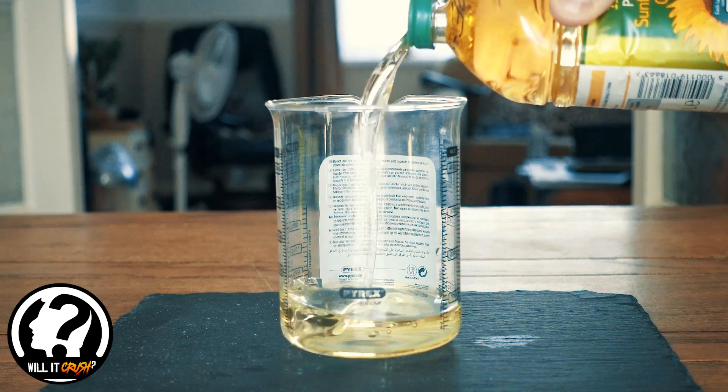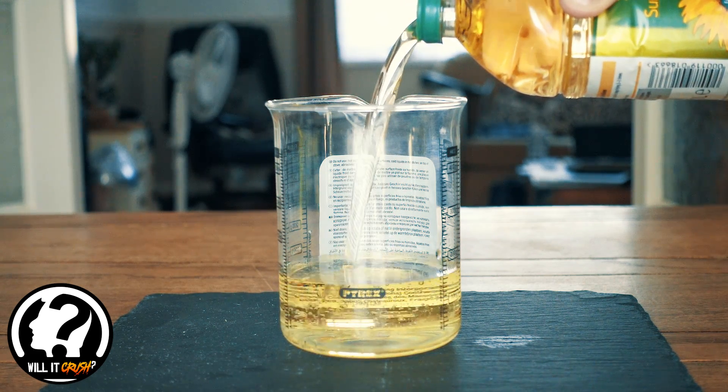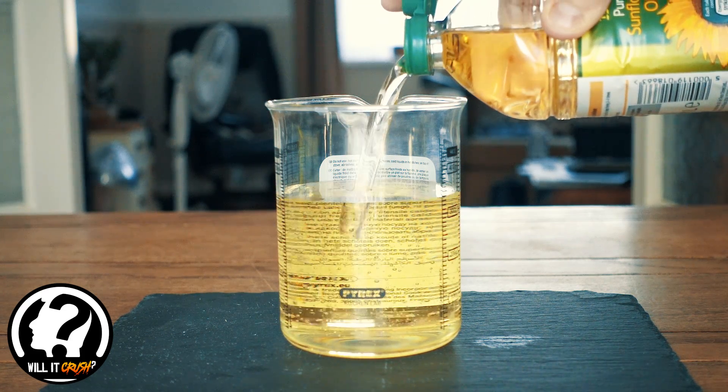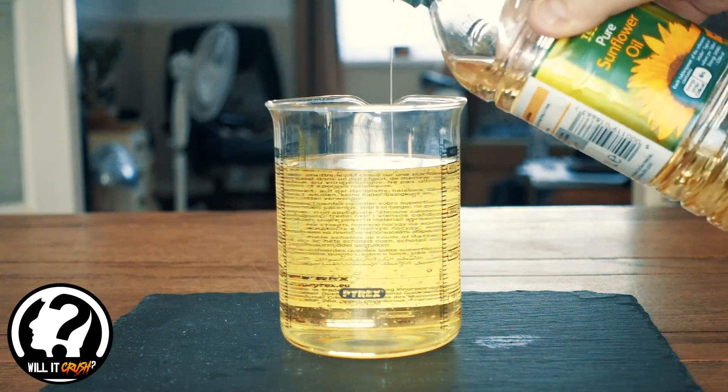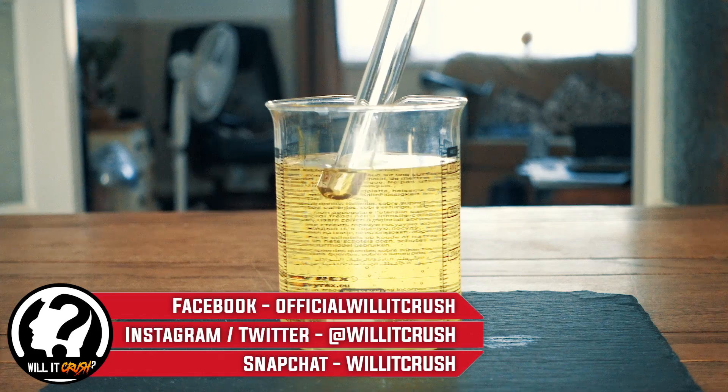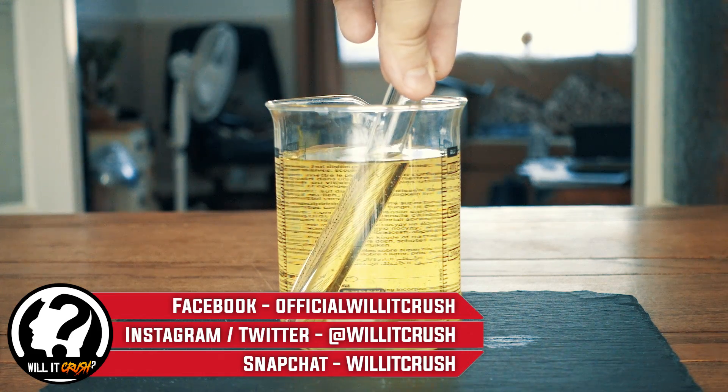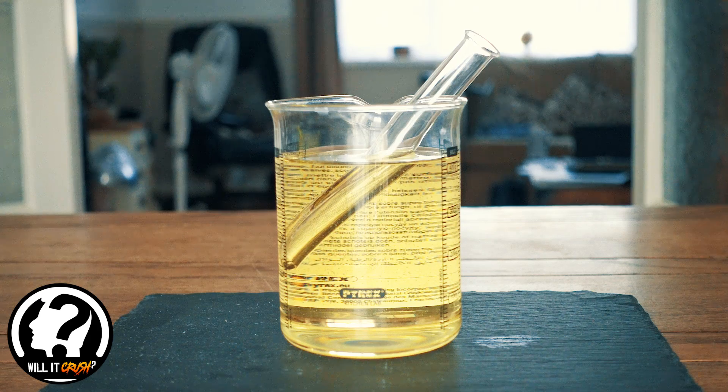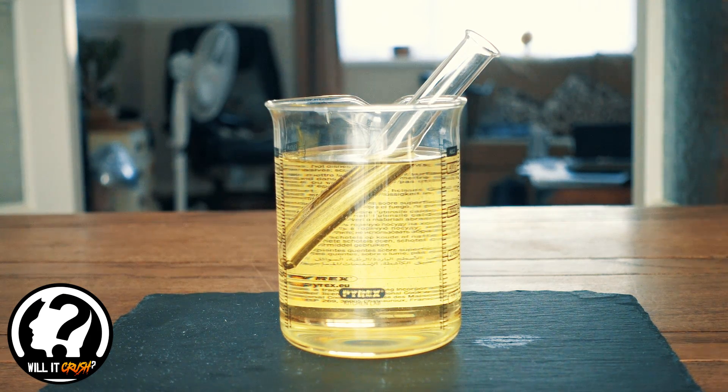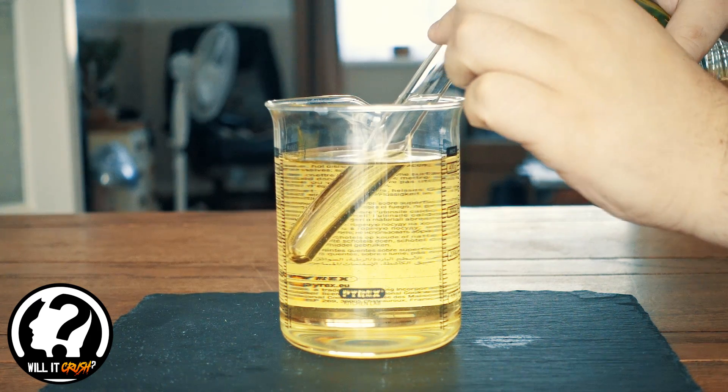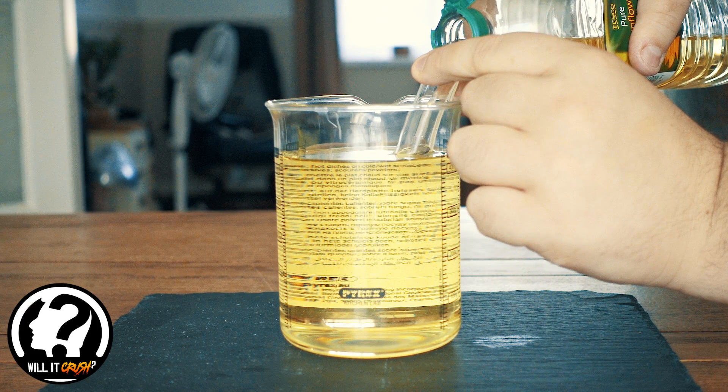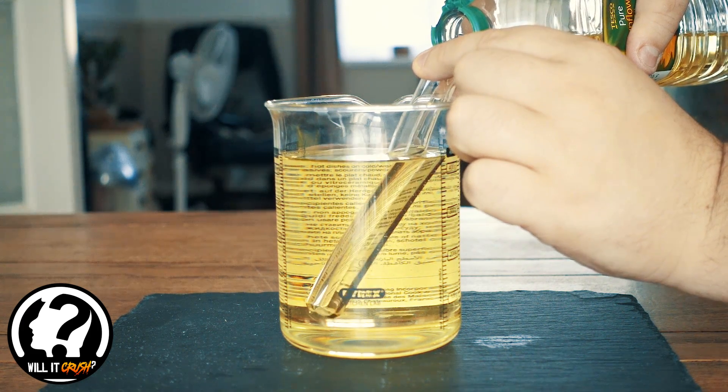We'll fill it up with the sunflower oil and you'll see what happens in a minute. So once I put the test tube into the beaker you can see that you can still see it perfectly fine, because inside that test tube all there is is the air from the outside, so you can see it refracting in there. But once we start to fill it up with more sunflower oil, look at that, totally disappears. Right, there we go.